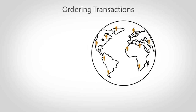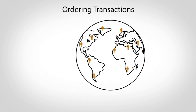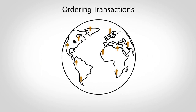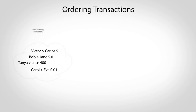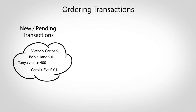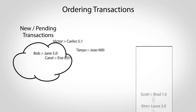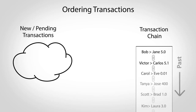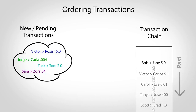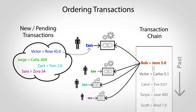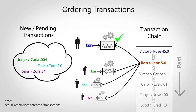Bitcoin prevents this by providing a way for the entire world to decide on transaction order. As new transactions are created, they go into a pool of pending transactions, and from here they'll be sorted into a giant chain that locks in their order. To select which transaction is next, a kind of mathematical lottery is held. Participants select a pending transaction of their choice and begin trying to solve a special problem that will link it to the end of the chain. The first person to find a solution wins and gets to have their transaction selected as next in the chain.